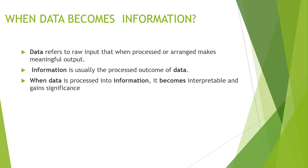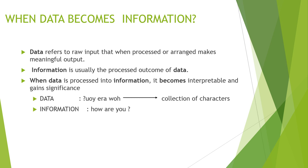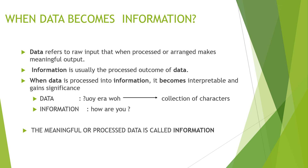Let's see an example on data and information. In this example, data is just a collection of characters and symbols — we can't tell what is written. But when I process this data, say by reversing the string, it becomes information: 'How are you?' — because I can read and understand it. So here data becomes information as I can extract some meaning from it. If data is arranged in a systematic way, it gets a structure and becomes meaningful.